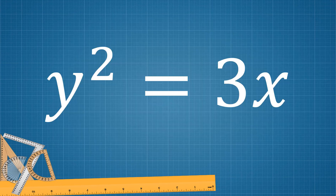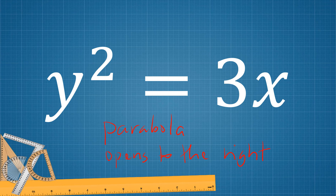Let's try another example. y squared equals 3x. Since it follows y squared equals 4px, this is a parabola. The orientation is it opens to the right. Why? Since the variable with the square is y, we're going to choose between left or right. Since the other side has a positive sign, it opens to the right.